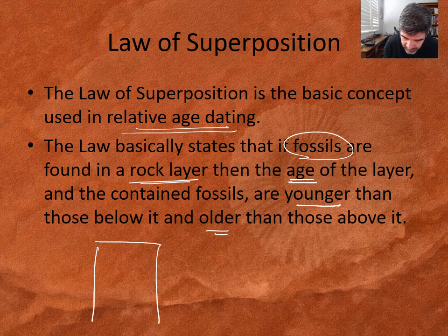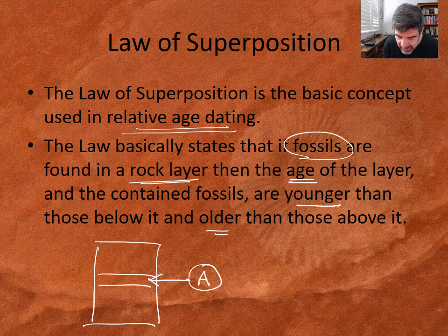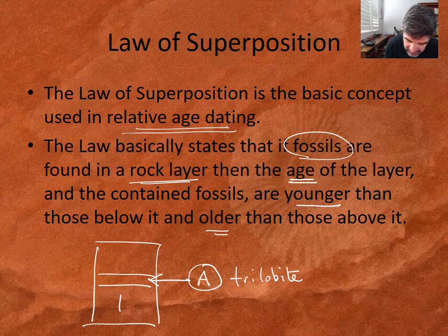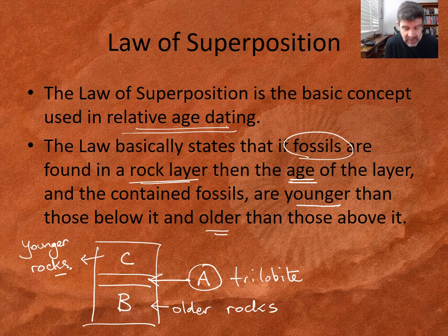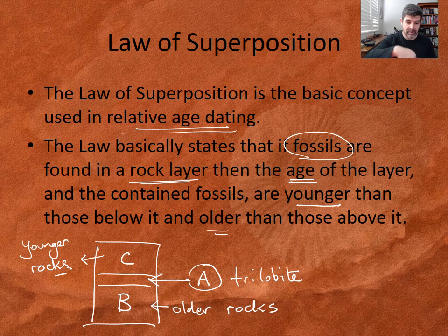To put that more simply: if this is layer A, and it has certain types of fossils — let's say trilobite fossils — then it is younger than those below it, so anything in region B would be older rocks, and anything in layer C would be younger rocks. Now, does this assumption always hold true? Well, pretty much. Occasionally rocks may fold and fall over each other, so there's a possibility that rocks lower in the column could be younger, but generally speaking that's fairly rare, and so we can be fairly confident with our assumption about the law of superposition.